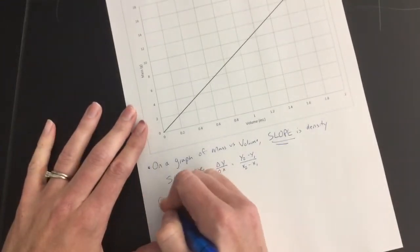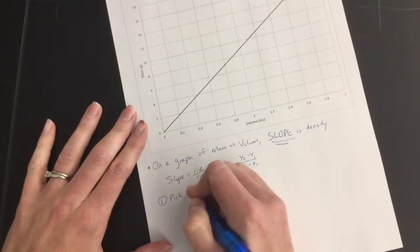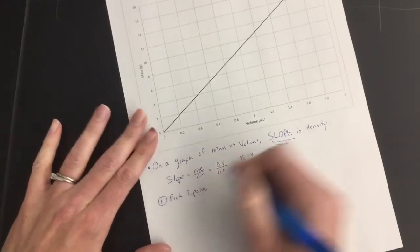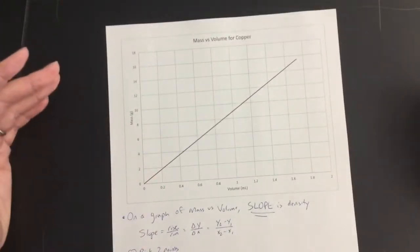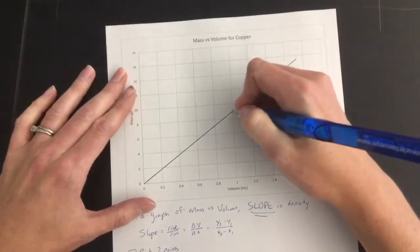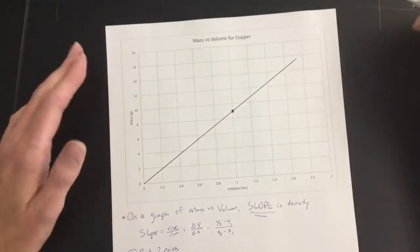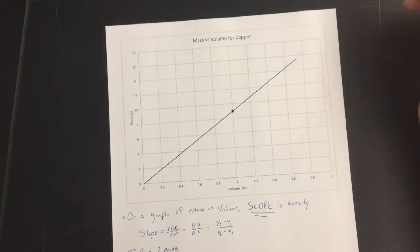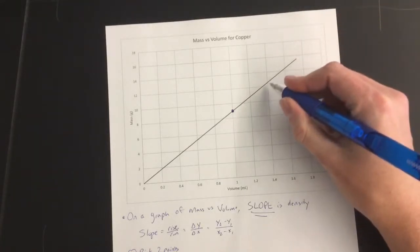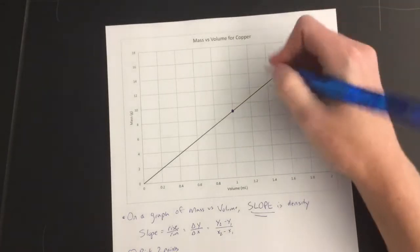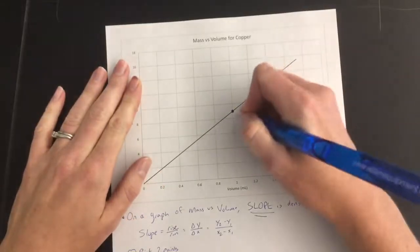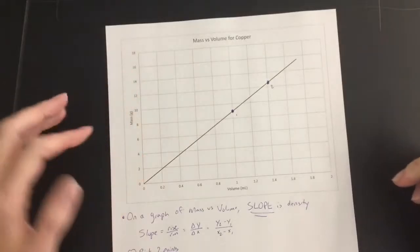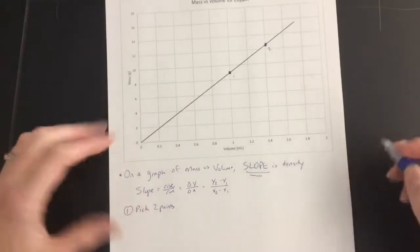So the first thing you have to do is you have to pick two points. I like to pick points that I can easily read the scale from, and this one where it's right in the middle looks like a pretty good one to pick, and then none of the other ones are really right in the middle, which means I'm going to have to do some estimating. I don't like estimating either. We'll pick this one here. So I got my first point and my second point. It doesn't matter which one's first, doesn't matter which one's second, it all works out in the math in the end.